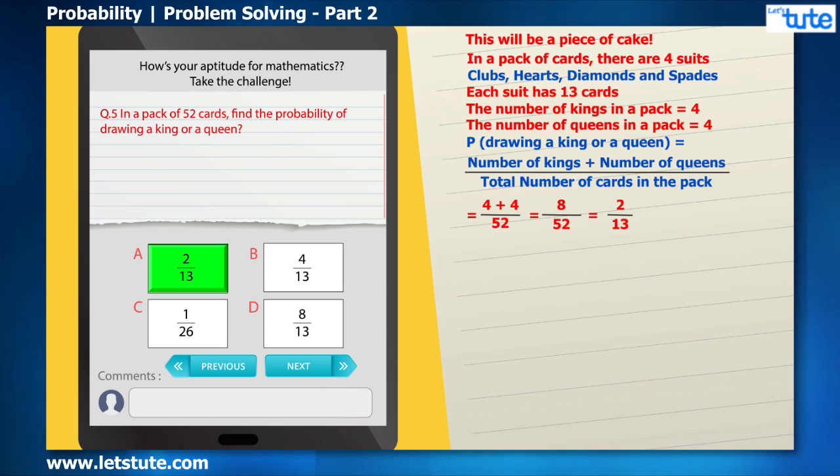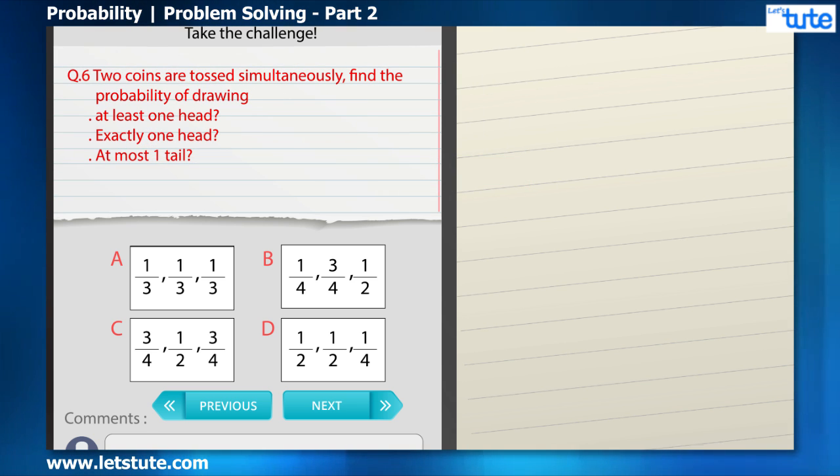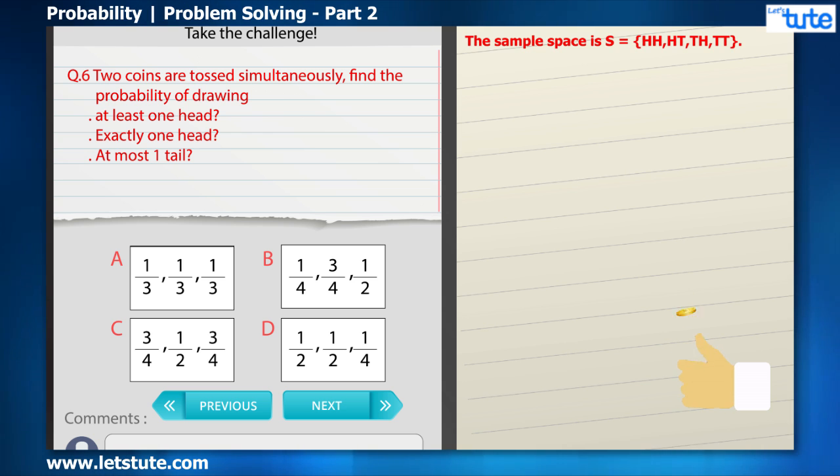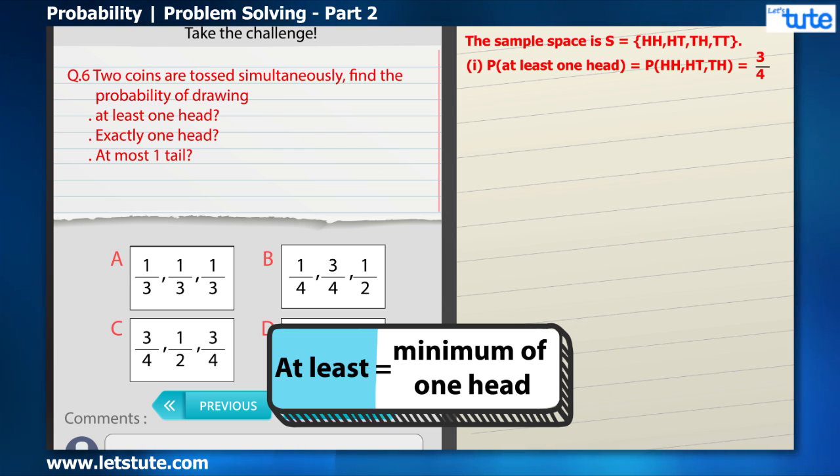Alex was enjoying this a lot and did not want this to end. Almost immediately, the next question was on his screen: Two coins were tossed simultaneously, find the probability of drawing at least one head, exactly one head, and at most one tail. Well, this is a tricky question. He knew when two coins are tossed, the sample space is {HH, HT, TH, TT}. So the probability of getting at least one head—well, here the word 'at least' means that there should be a minimum of one head. So from the sample space, we will choose all the possibilities which have at least one head, which will be HH, HT, and TH, which will be 3 by 4.